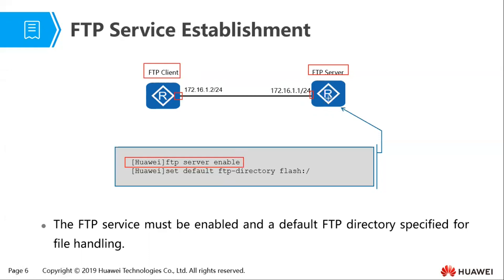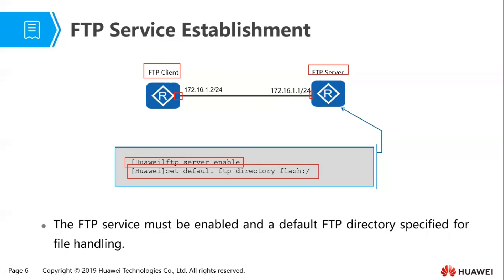Huawei S5700 switches can also act as a server. Once you enter that command, you need to set a default directory — the directory to which the client will be taken once the connection is made. It is important to note that where no default FTP working directory is set, the user will be unable to log into the router and will get an error saying they have no authority to access any working directory. You must always set the default FTP directory, for example setting it to flash.